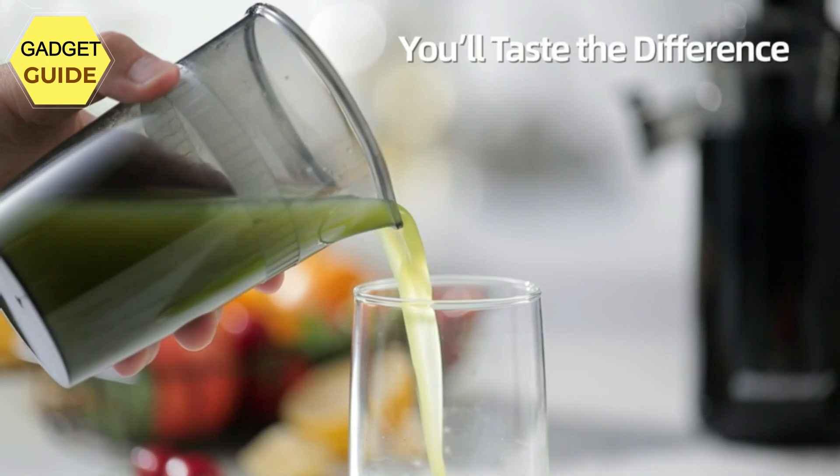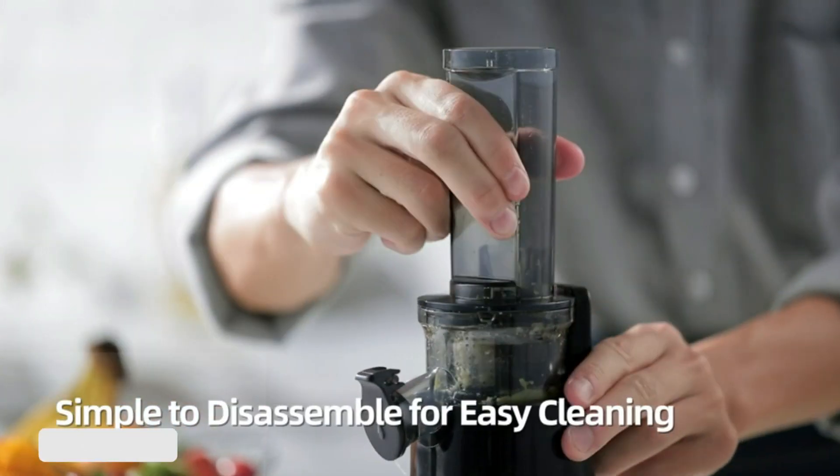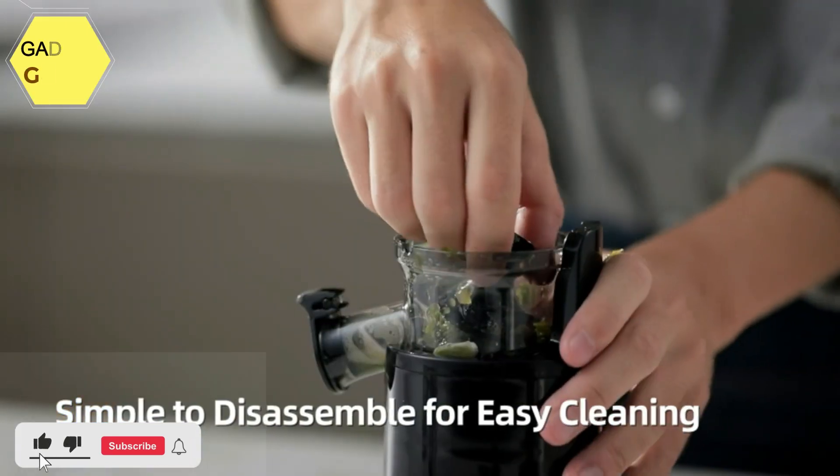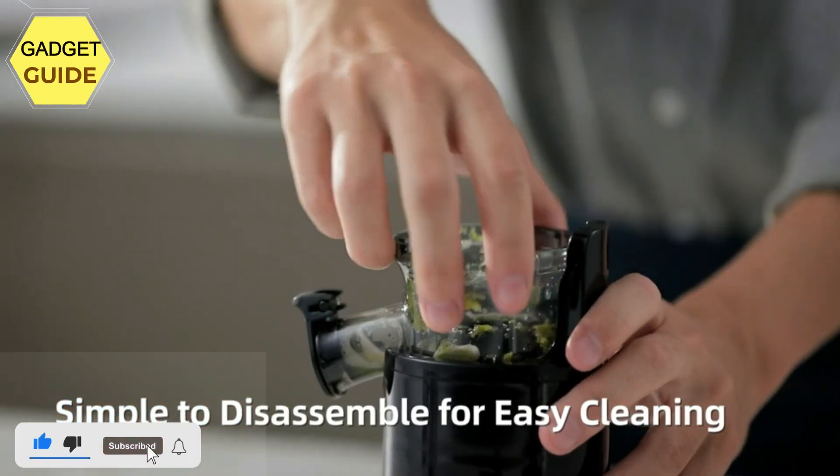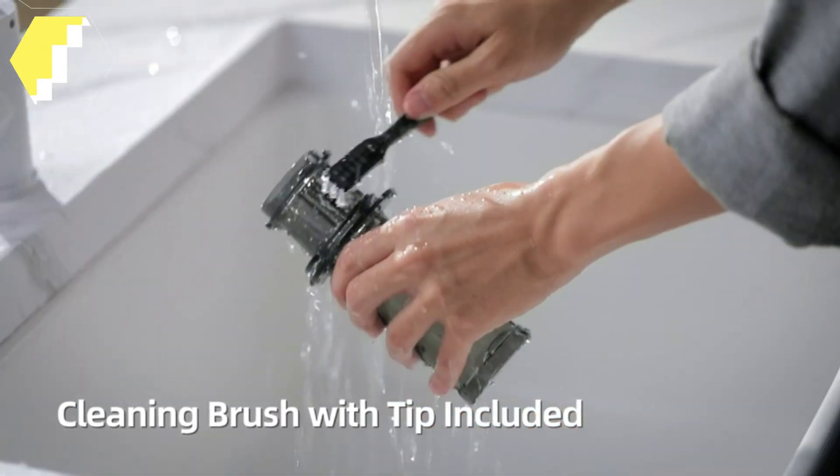Juice made with the slow juicer oxidizes more slowly, meaning your juice stays fresh for longer. The compact size is perfect for smaller kitchens and is a great space saver for anyone looking to make cold-pressed juice at home without sacrificing power and durability.